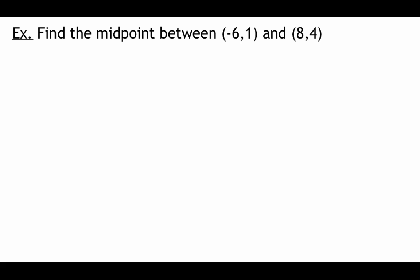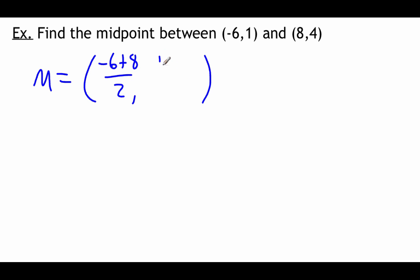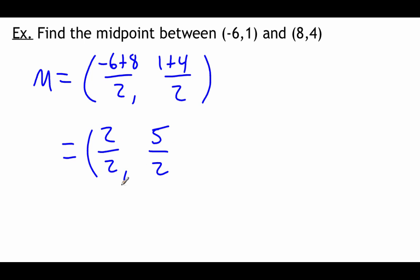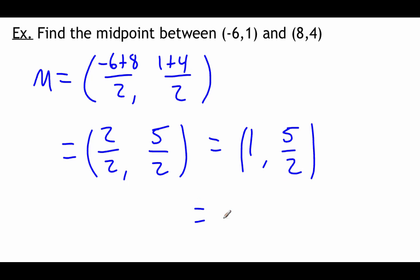Here's another example — pause the video, try it yourself, then check your answers. Finding the midpoint of (negative 6, 1) and (8, 4): add the x-values and divide by 2, then add the y-values and divide by 2. Negative 6 plus 8 is 2 over 2, which equals 1. One plus 4 is 5 over 2, which doesn't divide evenly, so we leave it as 5 halves — or 2.5 as a decimal. Either answer is acceptable.